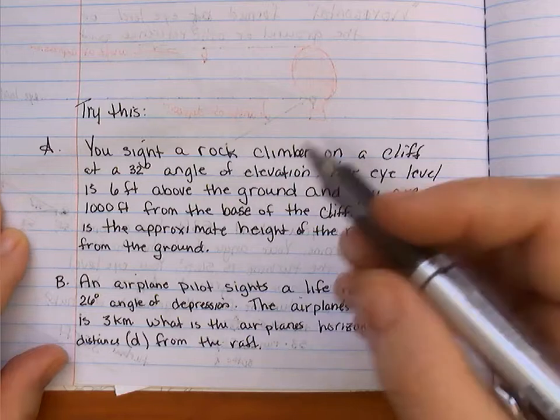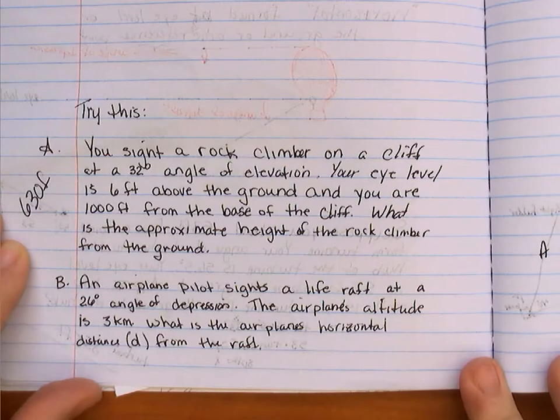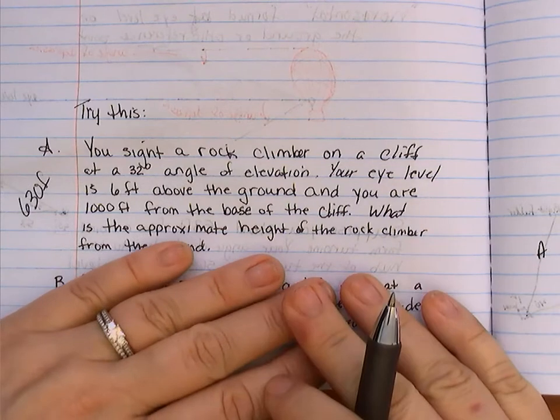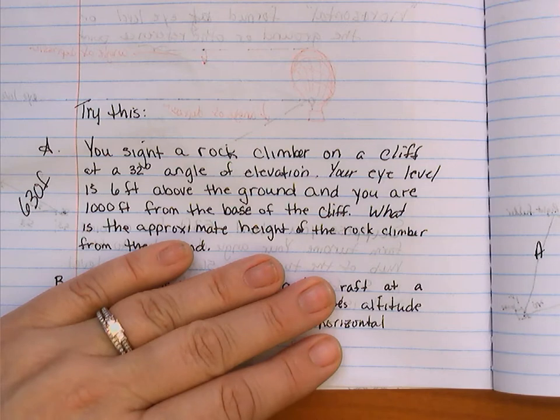You should have gotten that the rock climber was 630 feet is the correct answer. If that's not what you got, then you need to make sure you ask me a question. If you got 624, you forgot to add how high you were.